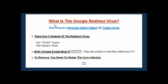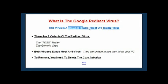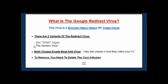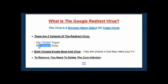So what is the Google redirect virus, or the redirect virus as it's commonly known? This virus is a browser hijack object, which is BHO, or a Trojan horse — there are two variations. Many people just think there's one redirect virus, but there are actually two different variations: the TDSS Trojan horse and just the generic redirect virus itself. Both of these actually work in a very similar way.